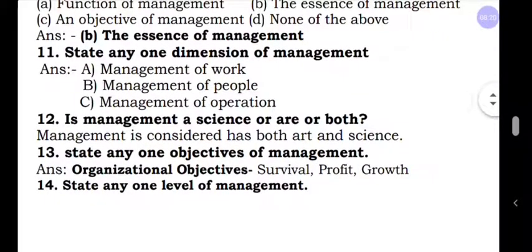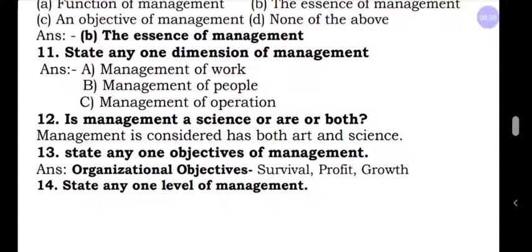Question number eleven: State any one dimension of management. This is a very important question. The dimensions are learned in the characteristics of management — management is multi-dimensional. There are three dimensions: management of work, management of people, management of operations. You can write any one. Question number twelve: Is management a science, art, or both? The answer is management is considered both art and science.